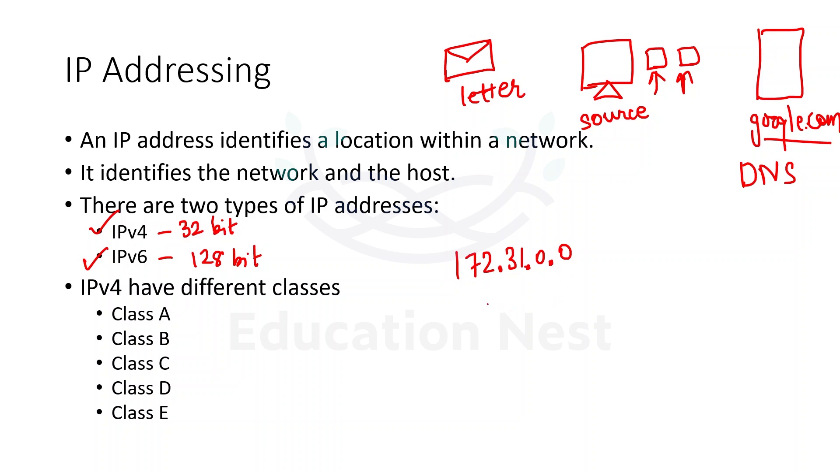Now why do I say octet over here is because this number is actually when converted to binary would be having eight bits inside of it. Now each of this number would be having eight bits. So let's say eight for this, eight for this, eight for this and eight for this. So in total, we do have 32 bit address with us. Similarly, into IPv6, we have 128 bit addresses.